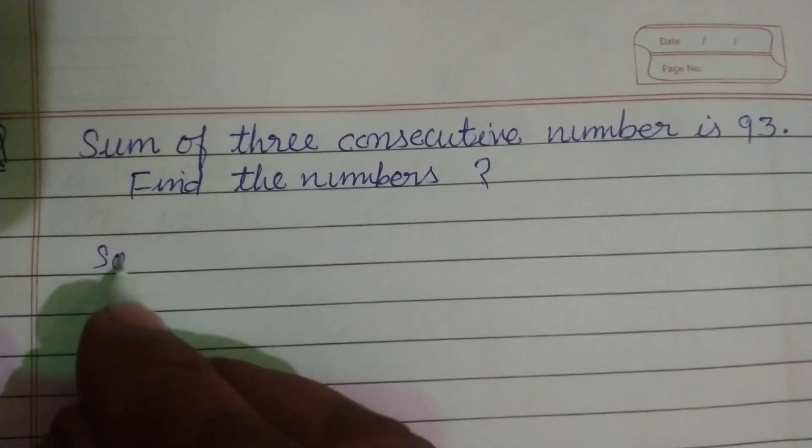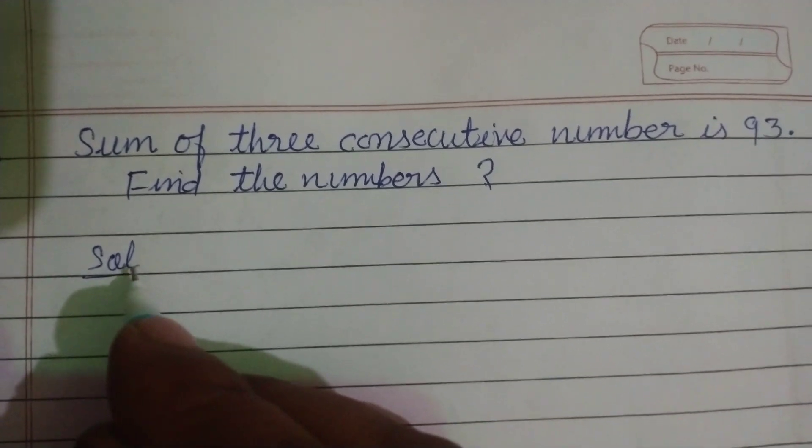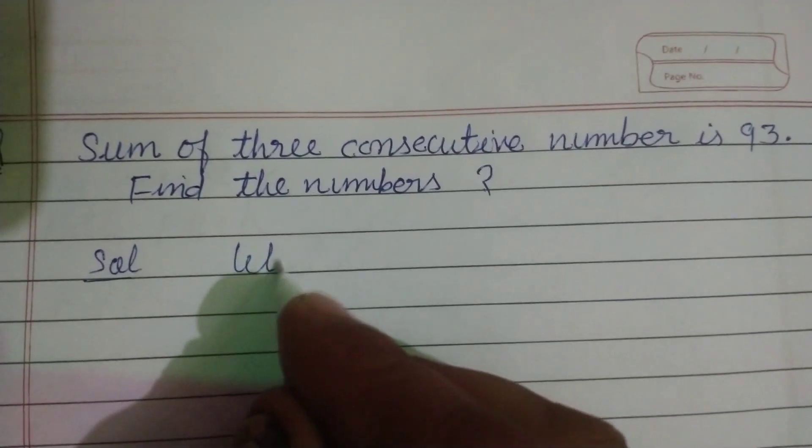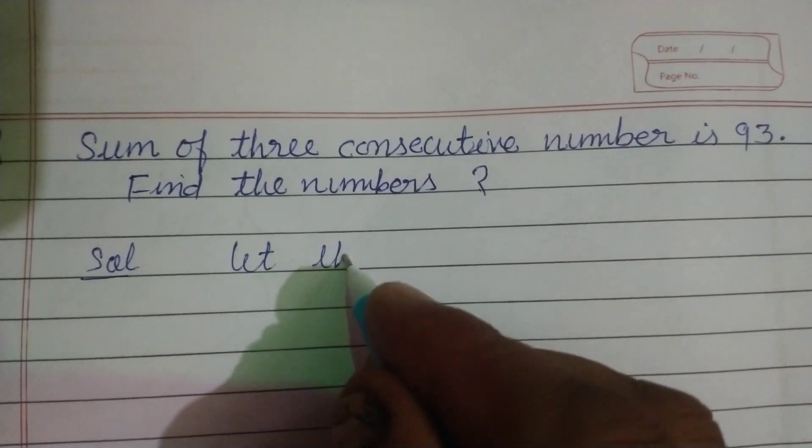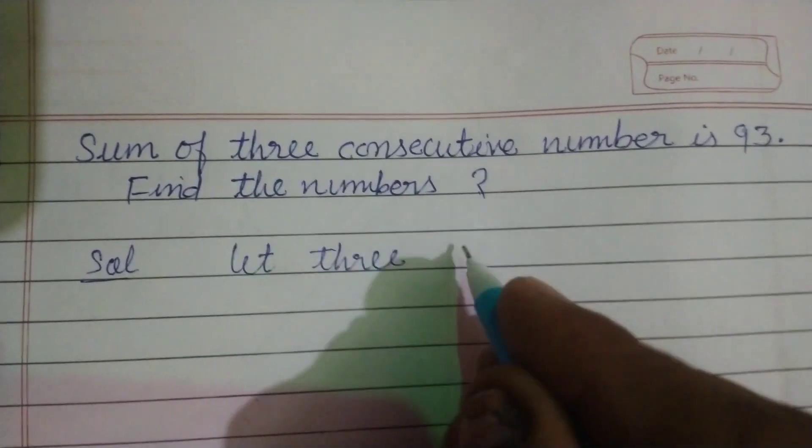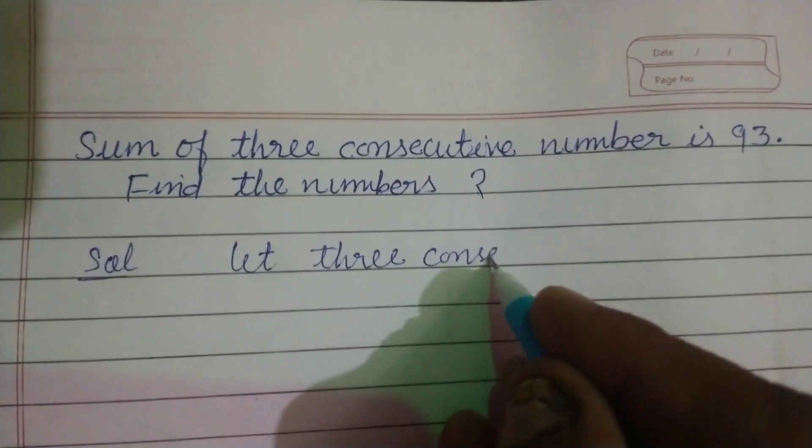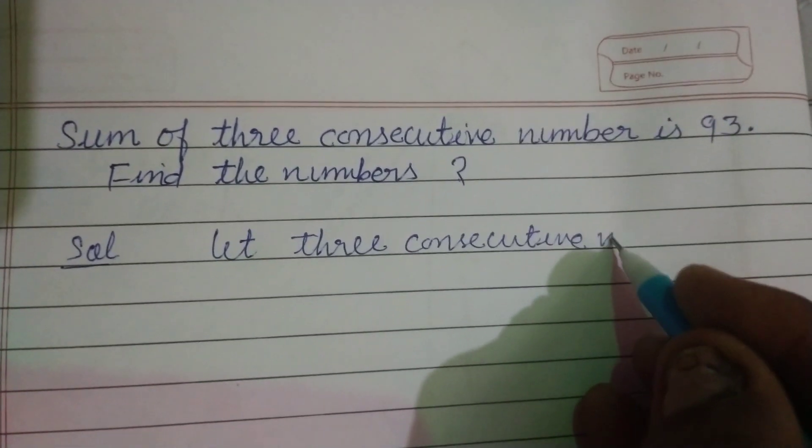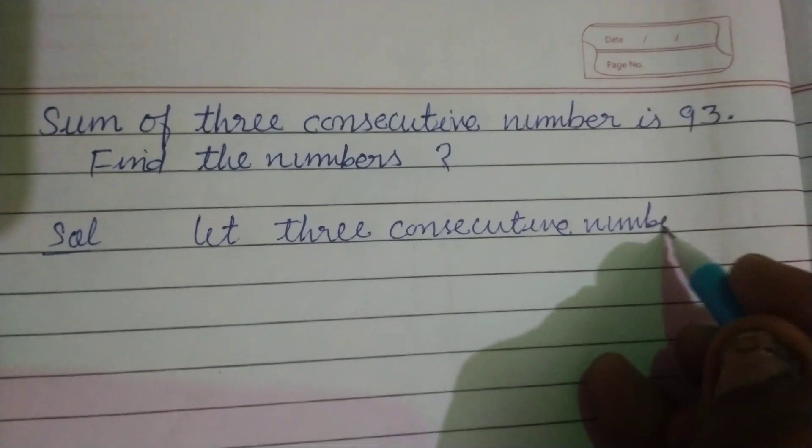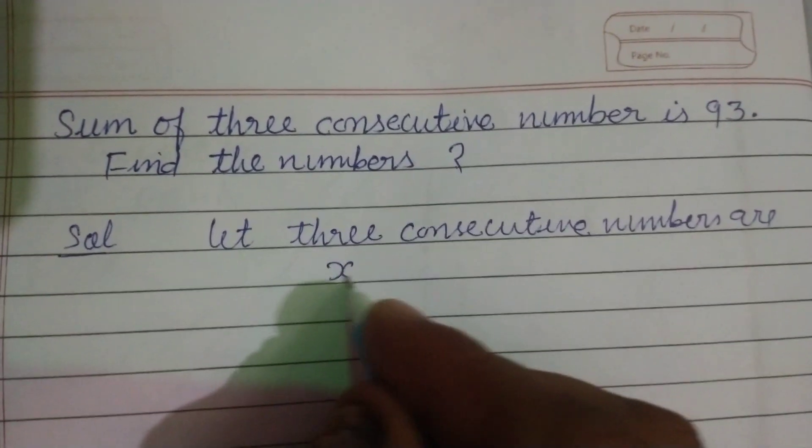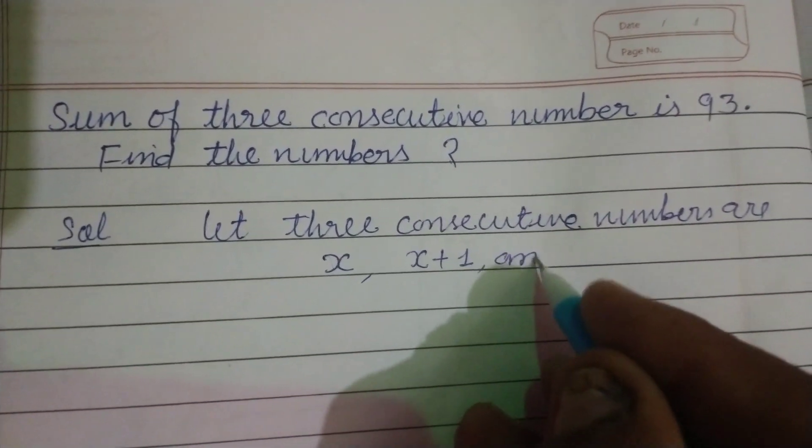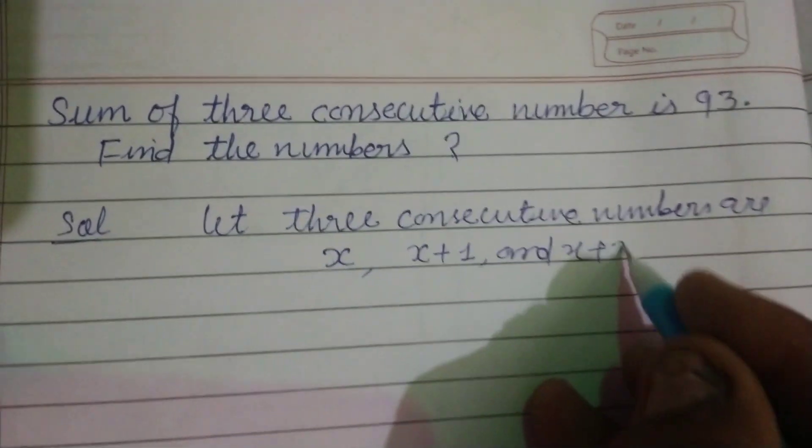So students, consecutive numbers are those numbers which come one by one. So let three consecutive numbers be x, x plus 1, and x plus 2.